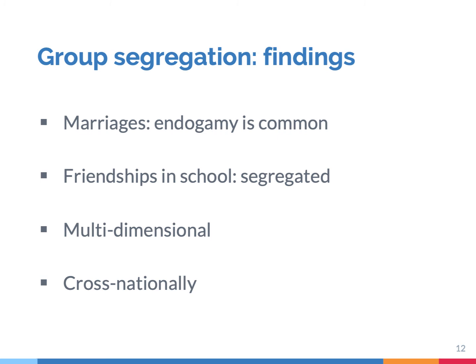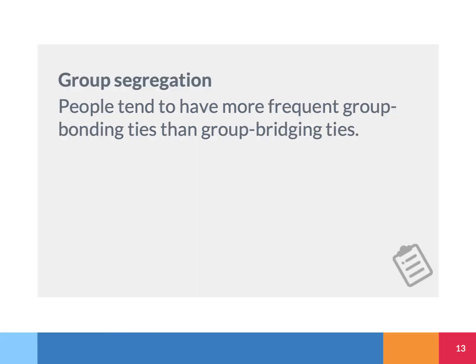Another insight is that segregation is multidimensional: people are often segregated by race, ethnicity, gender, age, and education. Finally, these patterns have been found across societies. Because of this overwhelming evidence, scholars call the phenomenon of group segregation a stylized fact — we have more group bonding ties than group bridging ties.